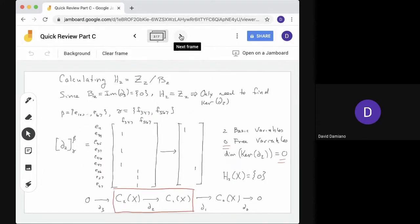Let's work with h2 first. H2 is z2 mod b2. Notice that b2 is the image of boundary 3. That was the zero map we see down at the bottom on the left. So the image is zero. There's nothing to do with b2. That means h2 is just equal to z2. Now all we have to do is find the kernel of boundary 2. So to do this, we have to write out a matrix for boundary 2.